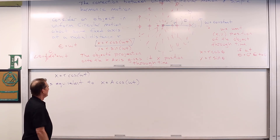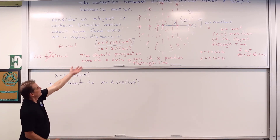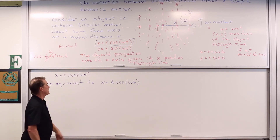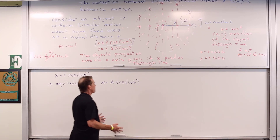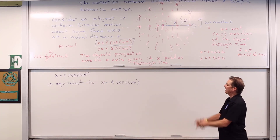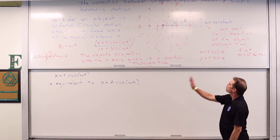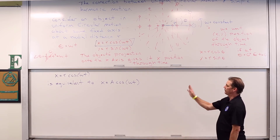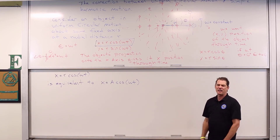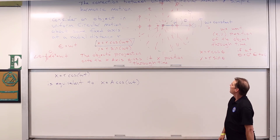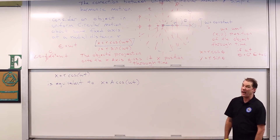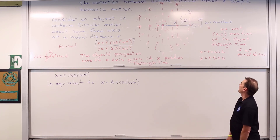Uniform circular motion produces sine and cosine waves and gives us simple harmonic motion as well — all interconnected. Pretty cool to think about, with the oscillator doing the same thing. That's kind of it — just a short tidbit on the connection. And this will translate into other things when we start looking at wave phenomena, which is coming up next.